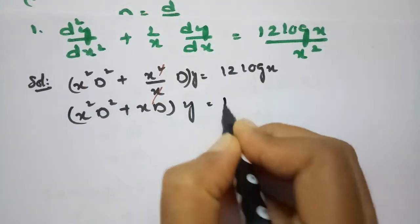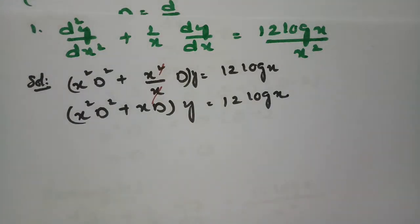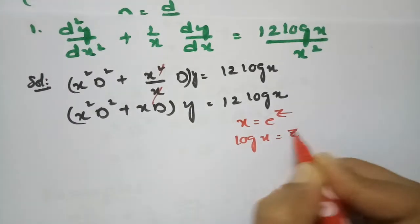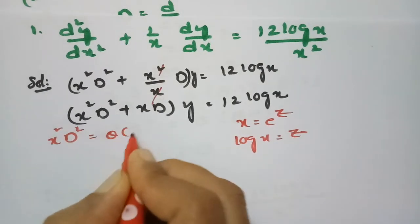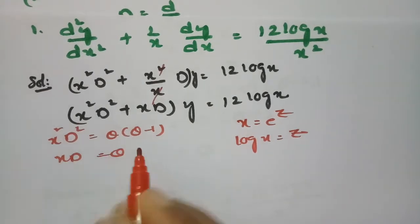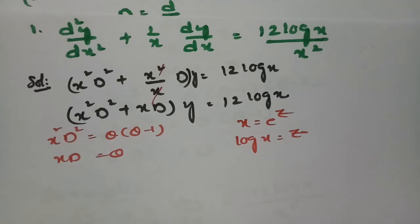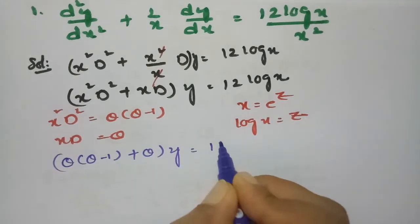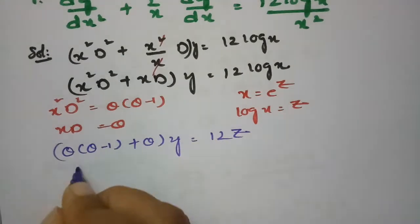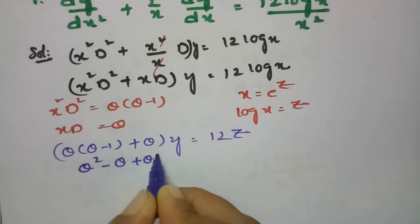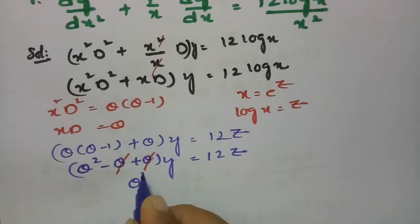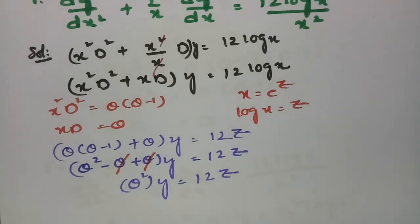So the equation becomes x²D² + xD of y = 12log(x). Now to transform this Cauchy's Euler equation into a linear equation with constant coefficients, we use the substitution x = e^z, log(x) = z. Replacing x²D² with θ(θ-1) and xD with θ, we get θ(θ-1) + θ of y = 12z. Expanding gives θ² - θ + θ, and canceling the ±θ terms gives θ²y = 12z.